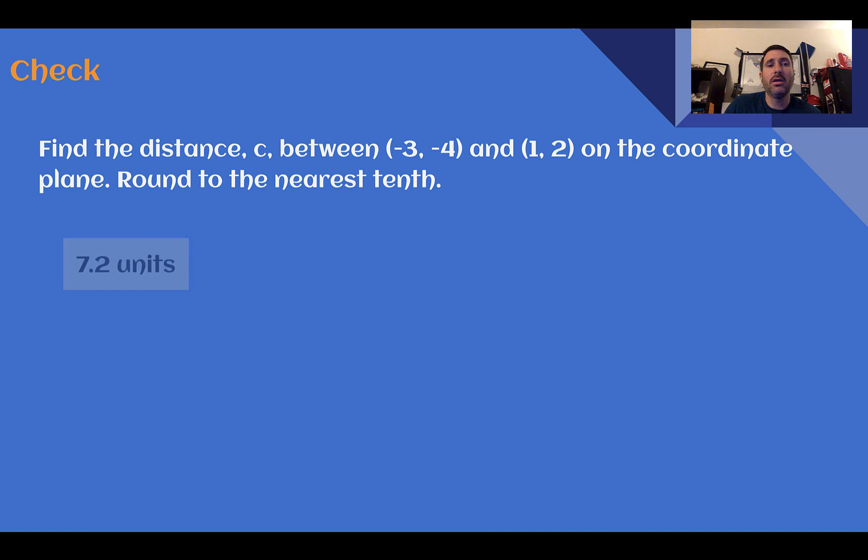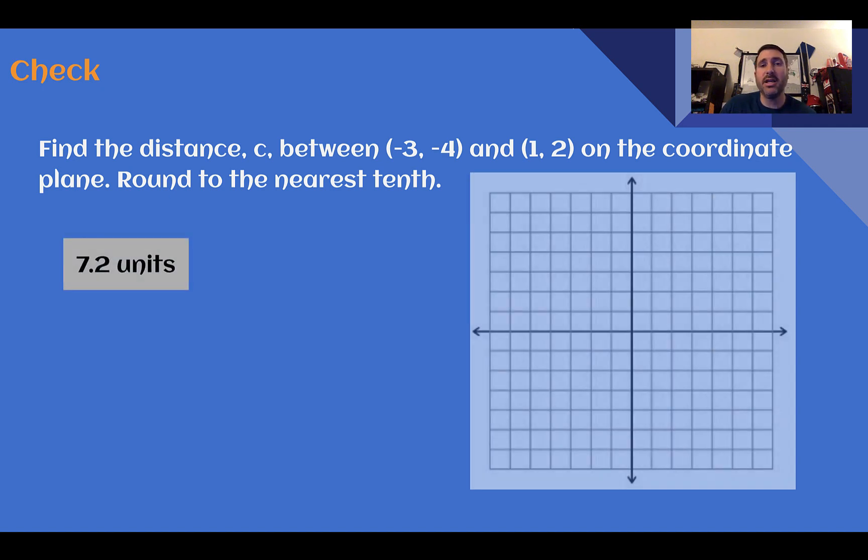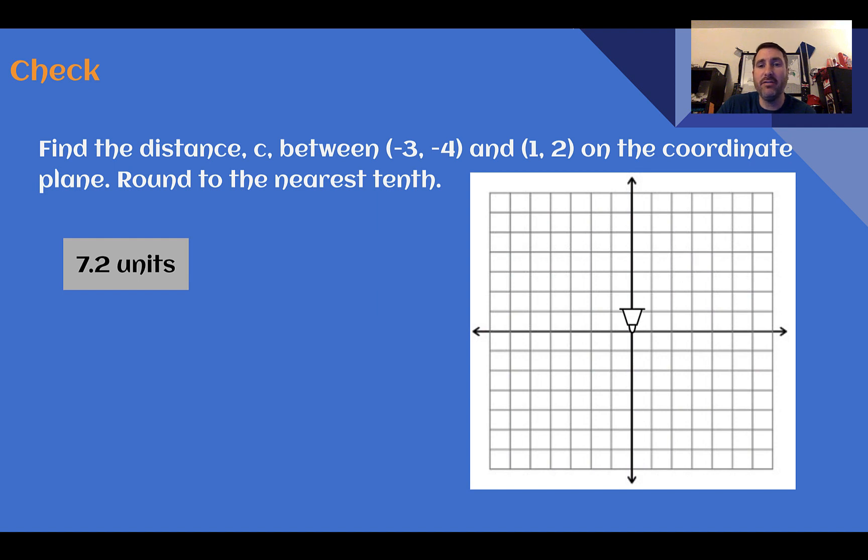Check your answer. You should have said they were 7.2 units apart. Let's look at how to get that. So negative 3, negative 4 is down here. 1, 2 is up here. If I connect them, there's my hypotenuse and my two legs. I could have went my legs over here. It doesn't matter. I made a triangle out of it. This is 1, 2, 3, 4 units wide and 1, 2, 3, 4, 5, 6 units tall.